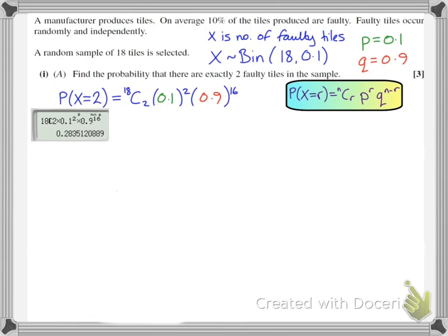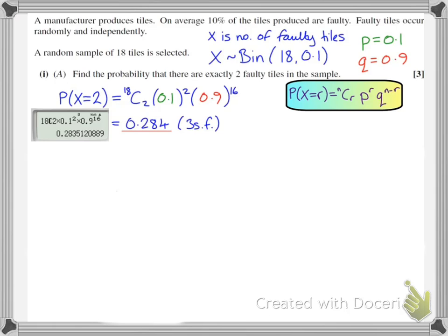I can type that into the calculator: 18, shift and then the button which says nCr above it, 2, multiply by 0.1 squared and multiply by 0.9 to the power of 16. This gives me 0.283512 and so on. As a general rule, I round probability answers to three significant figures — the first three non-zero digits are 283, the next digit is 5, so I round up. My final answer is 0.284 (3 s.f.).